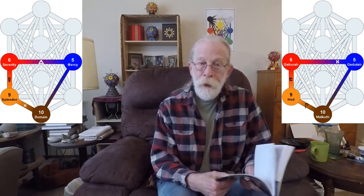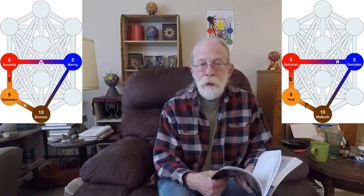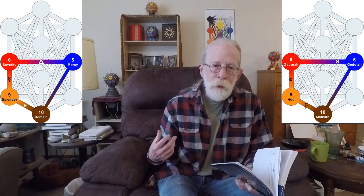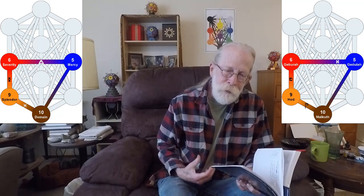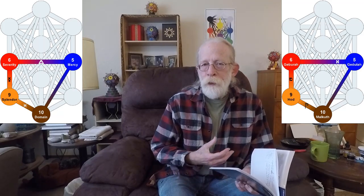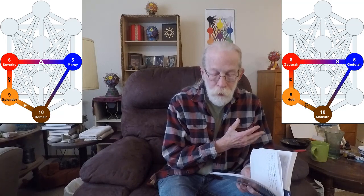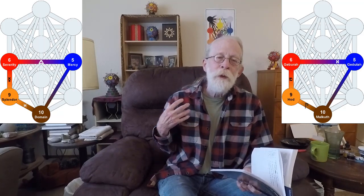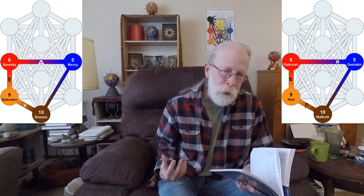Now, our next gate 170 is another quadrangle, and it goes from Hod down Pisces to Malkuth, up that hidden path to Gedjula, across Aleph to Gebura, and down Mercury back to Hod.